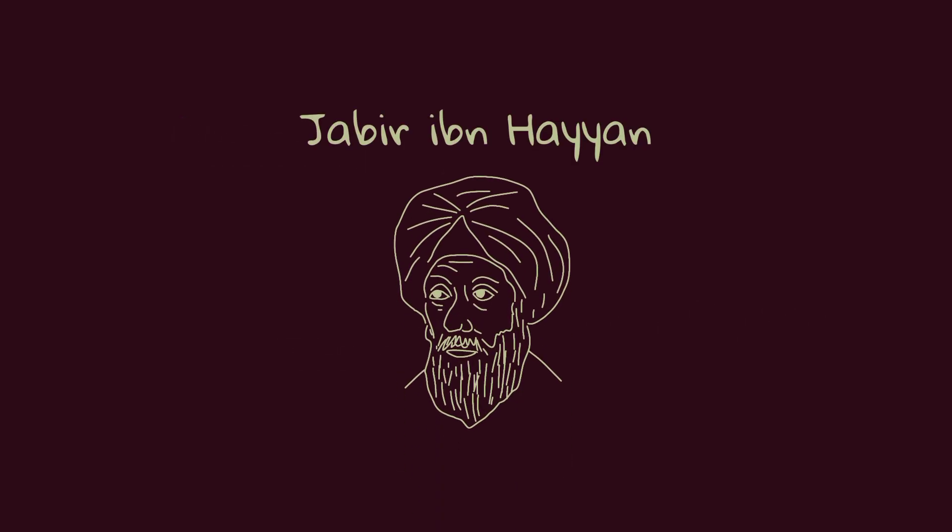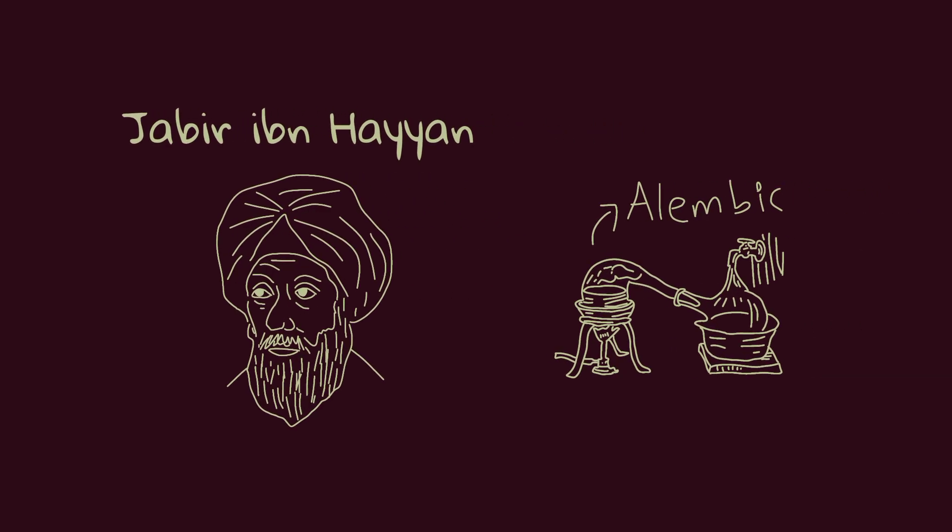Alchemy's golden age coincided with the golden age of Islamic civilization. Scholars like Jabir ibn Hayyan transformed alchemy from simple magic into a scientific discipline. He classified various chemical substances and designed tools like the alembic, which were the forerunners of modern laboratory equipment.